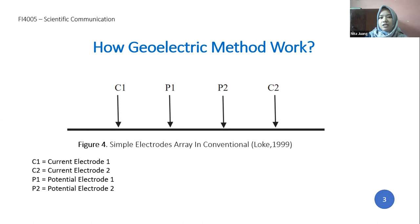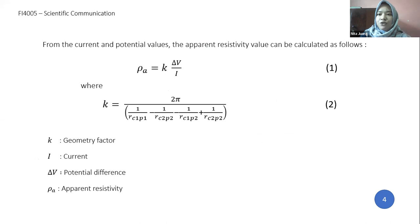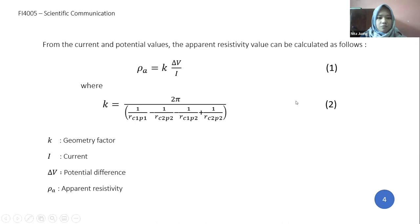From the value of current and potential difference, the apparent resistivity value can be calculated using Equation 1, with the value of K calculated in Equation 2, where K is the geometric factor, I is current, delta V is potential difference, and rho A is apparent resistivity.